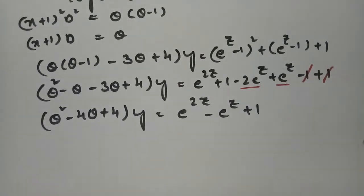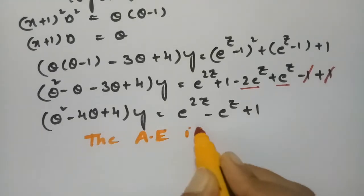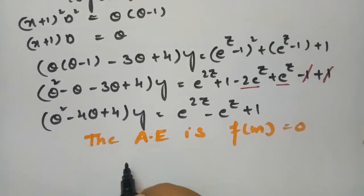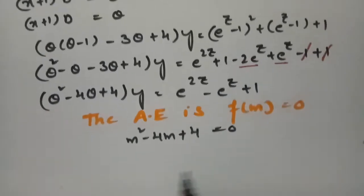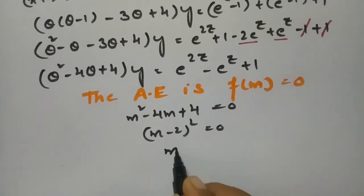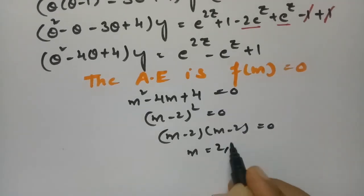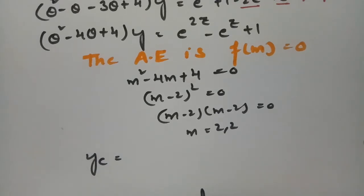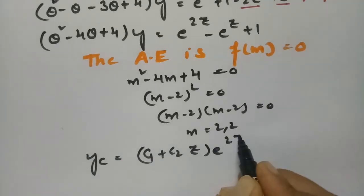To find the complementary function, we need the auxiliary equation f(m) = 0. Replacing θ with m: m² − 4m + 4 = 0, which factors as (m − 2)² = 0. This gives equal roots m = 2, 2.